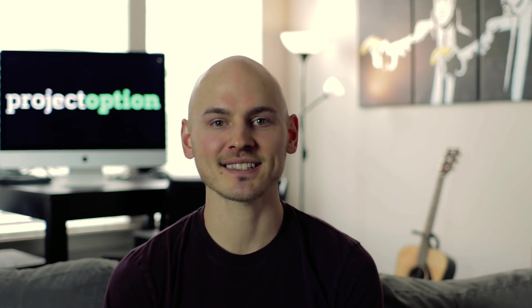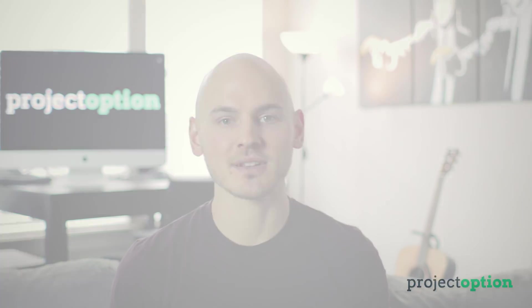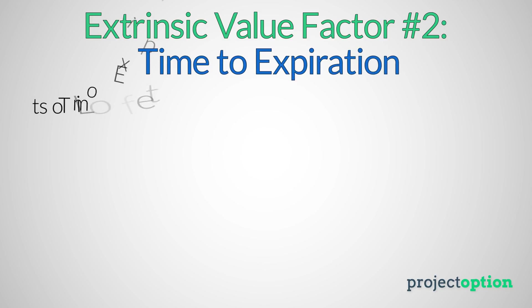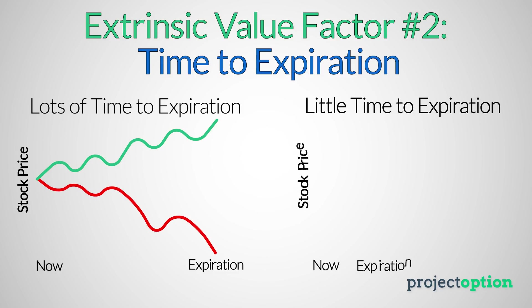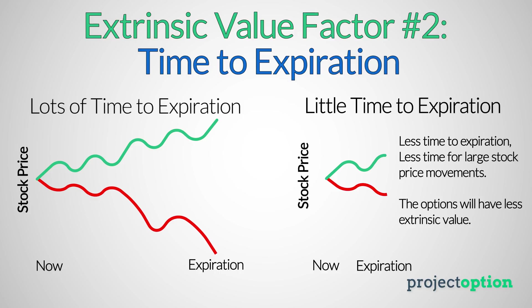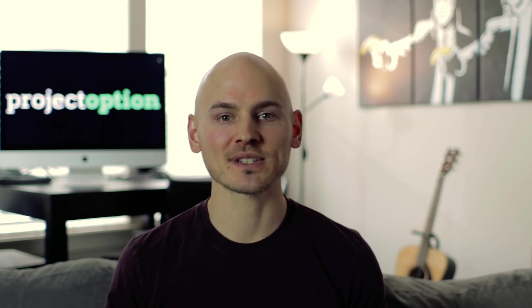The second key factor when analyzing extrinsic value is how much time an option has until expiration. Options with very little time until expiration will trade with less extrinsic value than options with lots of time, because options with more time have more opportunity for the stock price to move and the option to become significantly more valuable. Options with little time remaining trade with less extrinsic value because there's simply less time for the option to gain value.